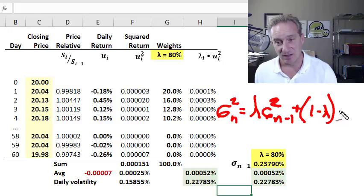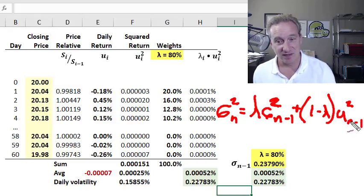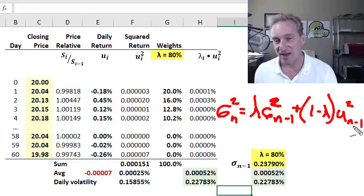And that weight is going to be applied to the most recent return squared, sometimes called the innovation. So that's the most recent information. It gets a weight of one minus lambda. And this recursive version of the exponentially weighted moving average is an elegant summary of the same result we would get if we went through this tedious infinite series.